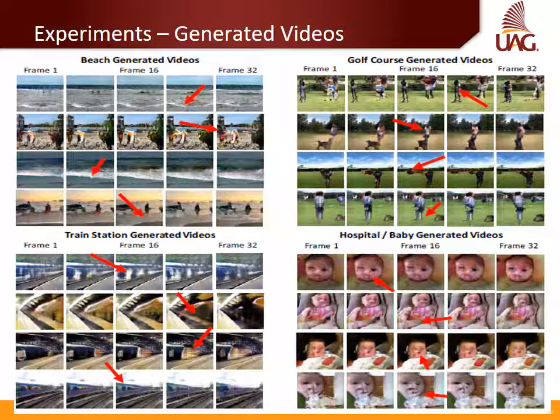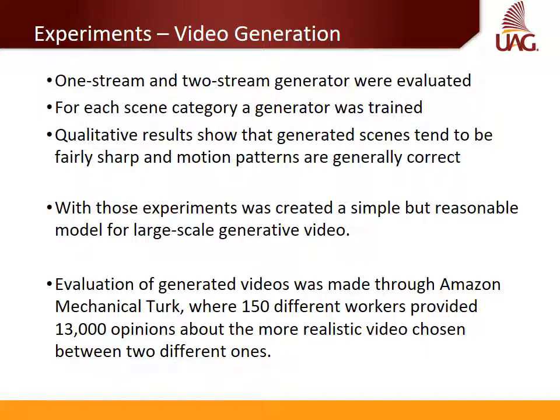Those are some generated videos of the two-stream model. Examples of the four scenes are shown in the references slide and linked to the original paper and animated movies. Experiment 2 is about video generation, where one-stream and two-stream generators were evaluated. For each scene category, a separate generator was trained. Qualitative results show that generated scenes tend to be fairly sharp and motion patterns are generally correct — for example, the beach model tends to produce beaches with crashing waves.